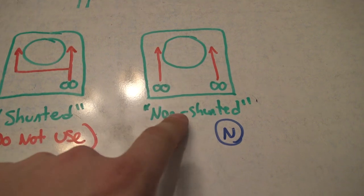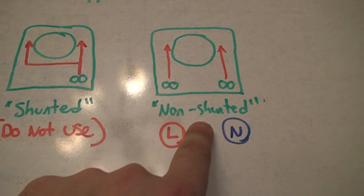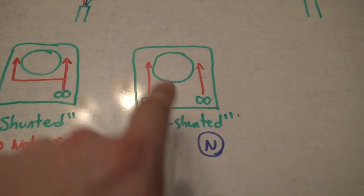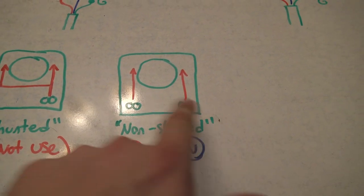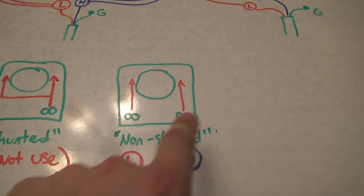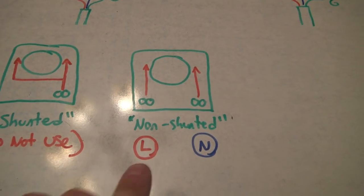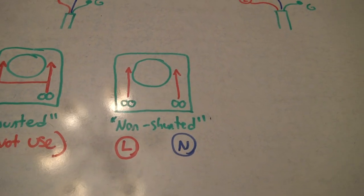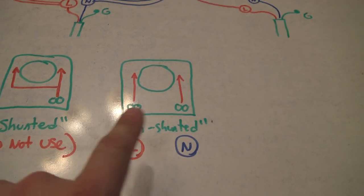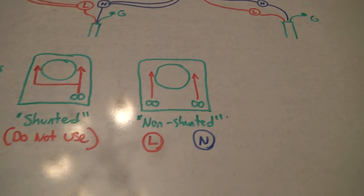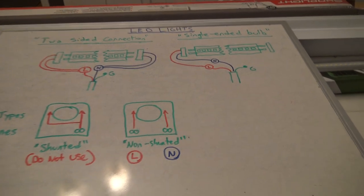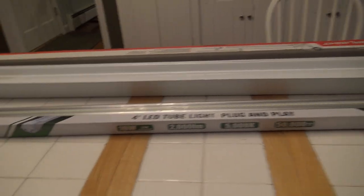The one that you're going to find most often is non-shunted. And essentially, what that means is you've got two wire terminals, one on each side, and it goes to one pin of that tombstone. So you've got your load coming in one side, and your neutral coming in the other side. That's what you're going to be looking for. That will keep you out of trouble when you are rewiring these fixtures for LEDs.